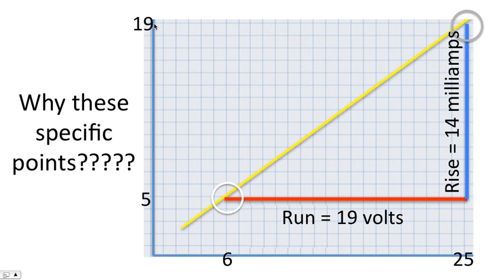And so the run then is easy to calculate. In this case, it would be 19 volts. And similarly, the rise would be easy to calculate. It would be 14 milliamps.